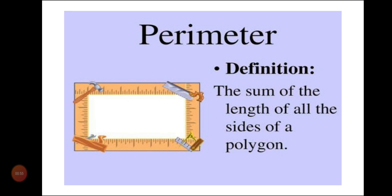A polygon means any shape, whether it is a three-sided figure — a triangle — or a four-sided figure — a quadrilateral, such as a square, rectangle, parallelogram, trapezium, or kite. It can even be a five-sided figure. To find out the perimeter, we just take the sum of all the sides of the given polygon.